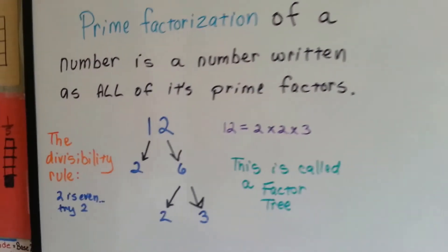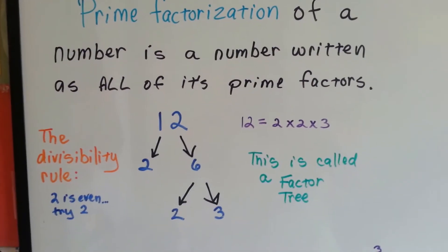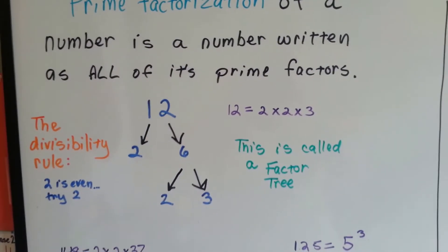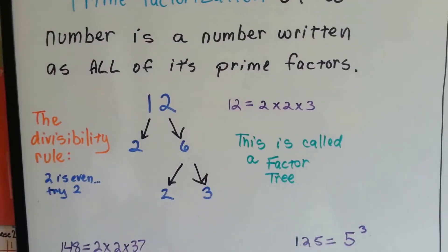Well prime factorization of a number is a number written as all of its prime factors. All the numbers that are just multiplied by itself and 1 as factors.